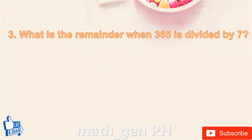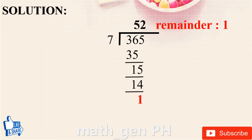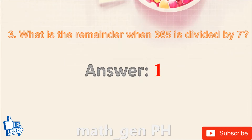Question number 3: What is the remainder when 365 is divided by 7? Solution: 365 ÷ 7 = 52 with a remainder of 1. Answer: 1.